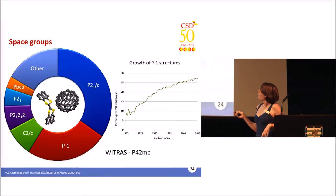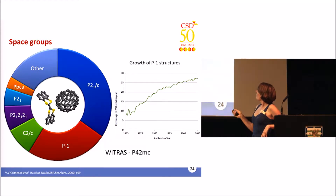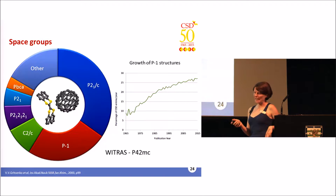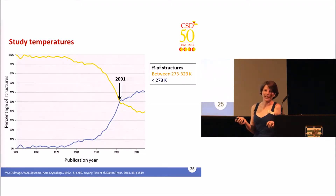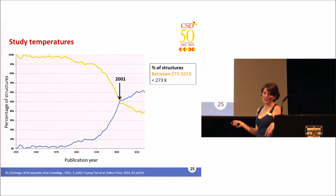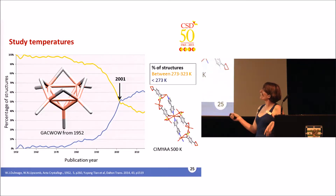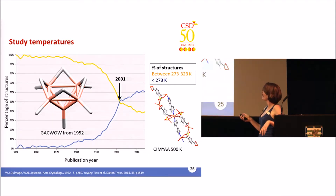With so many structures we can look at crystallographic information and see trends emerging. Looking at space groups, about 25% of structures are now published in P-bar-1. We can see the most common space groups, and this particular structure is in the rarest space group — the only structure with 3D coordinates in P4₂mc. We can also see changes in technology reflected in the CSD: this chart shows different study temperatures over the years, and you can see when cryostreams first started to be used in the 1990s. In 2001, the number of low-temperature structures started to outweigh room-temperature structures.